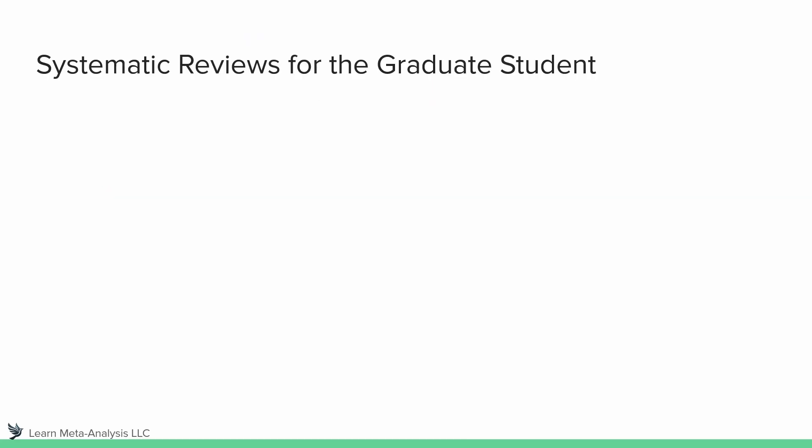So why do we want to actually do a systematic review? If you're a graduate student, there are tons of reasons why systematic reviews are really helpful, and they're why I recommend graduate students really spend time learning the method and actually conducting a systematic review in their field. First and foremost, it's going to help you build a really deep understanding of your future content area, because you're going to end up reading the abstract of every single paper in your area that meets your search terms.